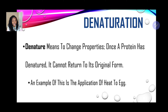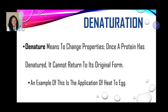An example of denaturation is the application of heat to an egg. After the egg has been cooked, can it be changed back to its original form? No — therefore it has been denatured, meaning it has changed from its natural or original form.